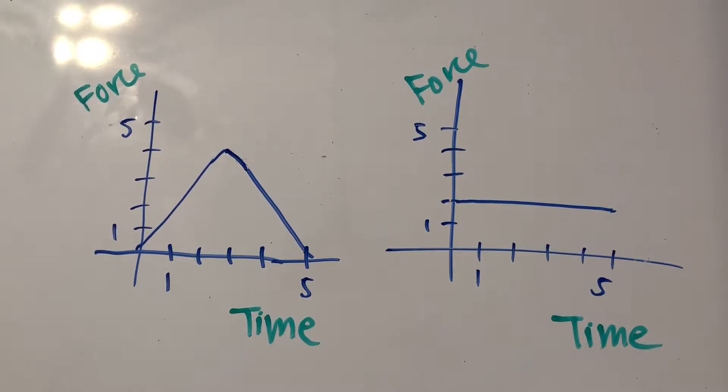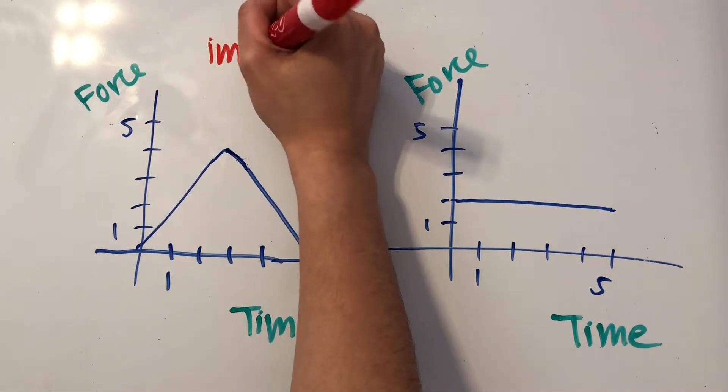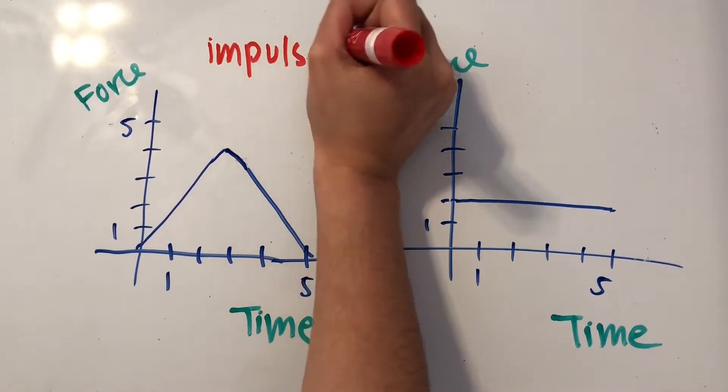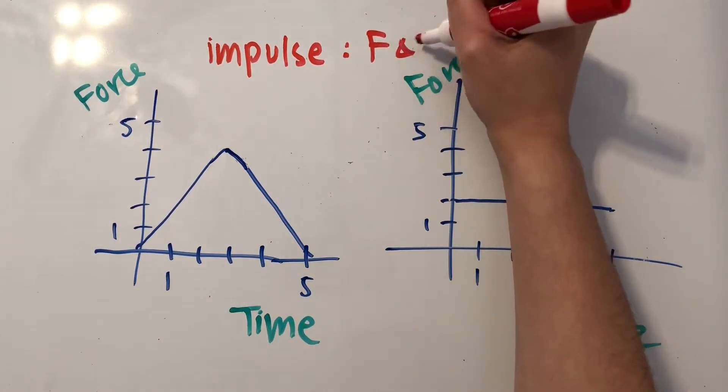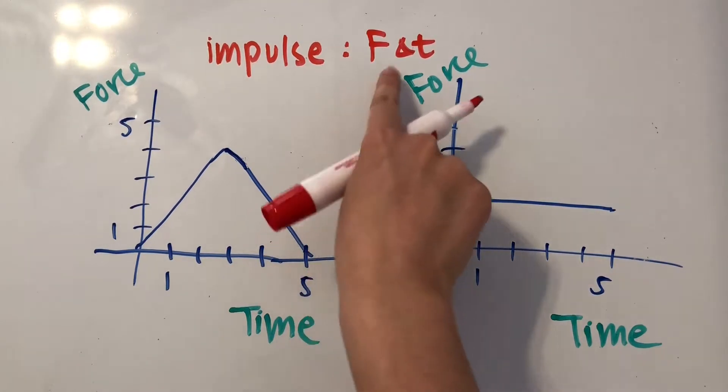Once you've seen enough force versus time graphs, it should automatically click in your mind that you're looking at an impulse problem. And that's because impulse is equal to the force exerted over a specific amount of time, and so that means it's equal to F delta t.